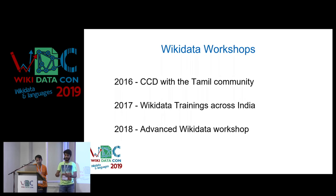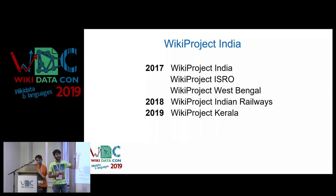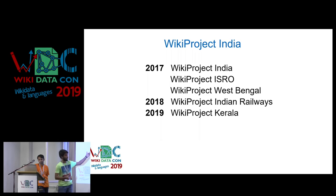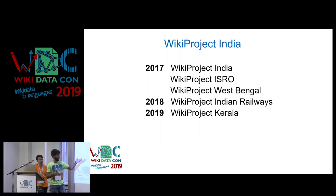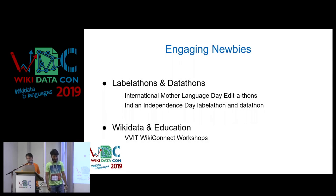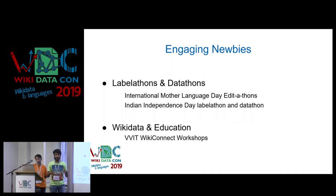Then in 2018, there was an advanced Wikidata workshop, which has actually helped in building some sort of Wikidata community around India. That also got the community engaged, and we started building WikiProject India and some other projects related to that, such as WikiProject West Bengal, Indian Railways, and Kerala. There have also been initiatives to engage newbies, such as editathons, labelathons, and datathons, as well as education workshops in educational institutions.